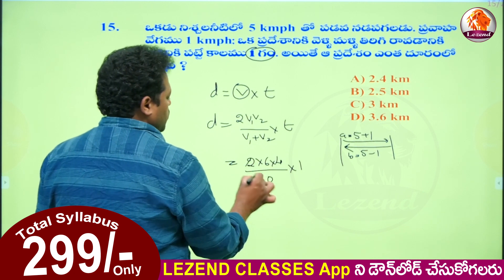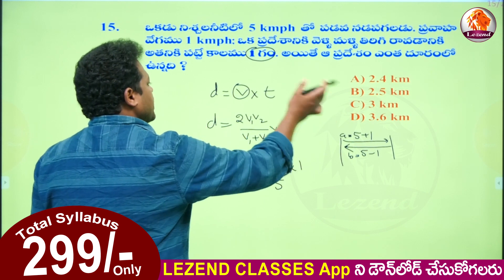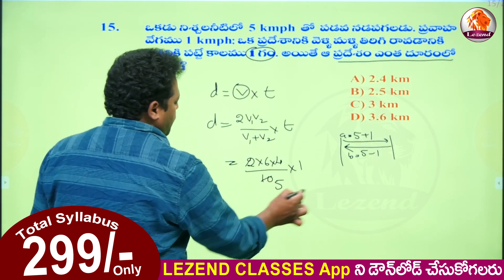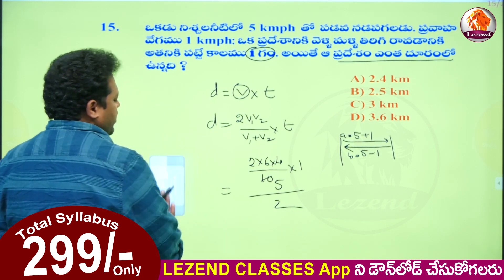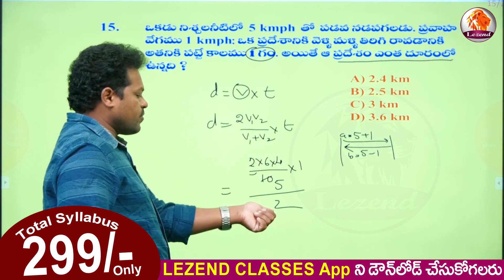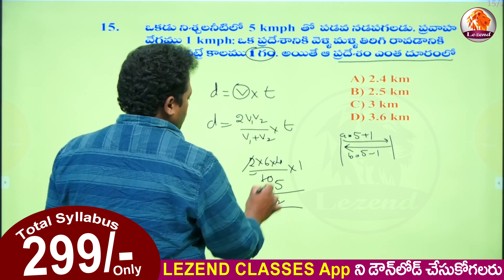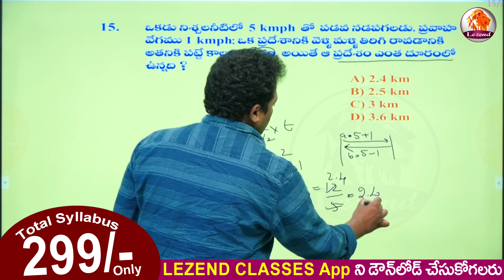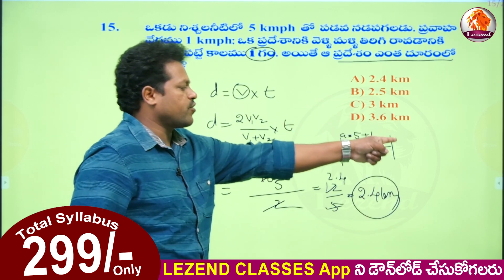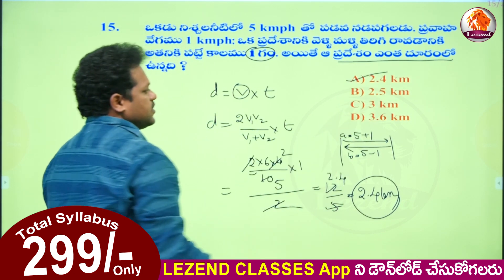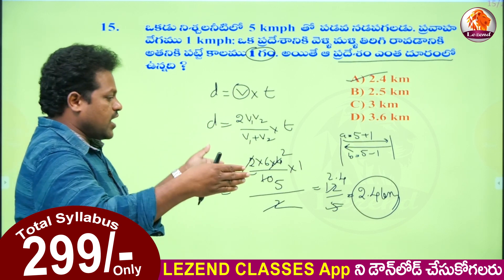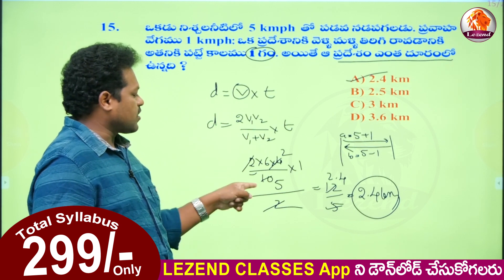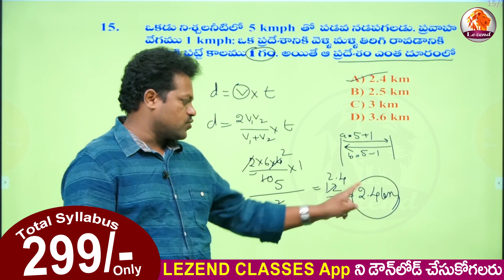2 into 6 into 4 by 6 plus 4, into 1 hour. So 2x 2x, therefore 12 by 5, or 28 by 5. Therefore 2.4 kilometers prayana duram. If you look at this, it's 4.8 kilometers total. Answer A, 2.4 kilometers prayana duram. So, using this formula, we get 2.4 kilometers.